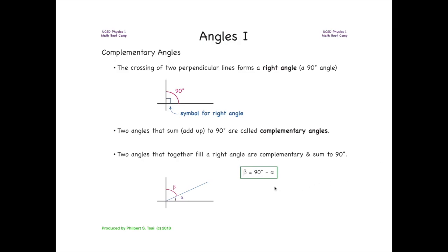That means if you see a geometry in which you know one of the angles that fill this 90-degree crossing, then you can calculate the other angle of interest by taking 90 degrees and subtracting the angle that you know. For example, if we know that angle alpha here is 25 degrees, then you can calculate this angle beta by simply subtracting 25 from 90 to get 65 degrees.